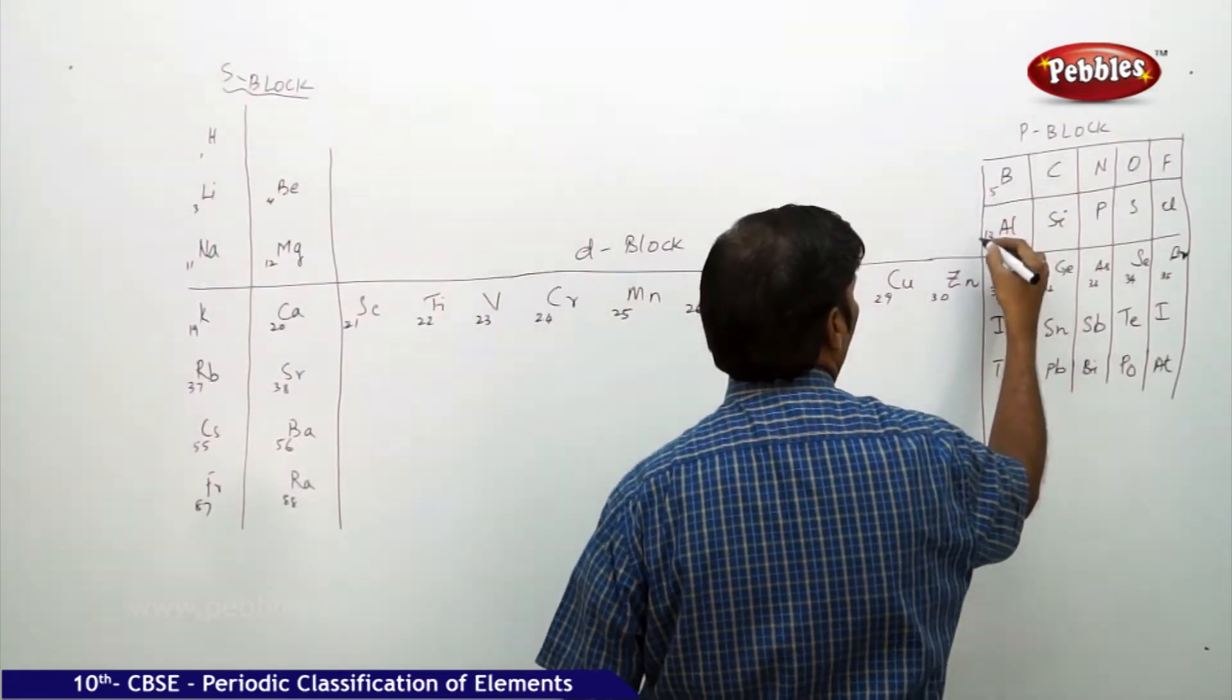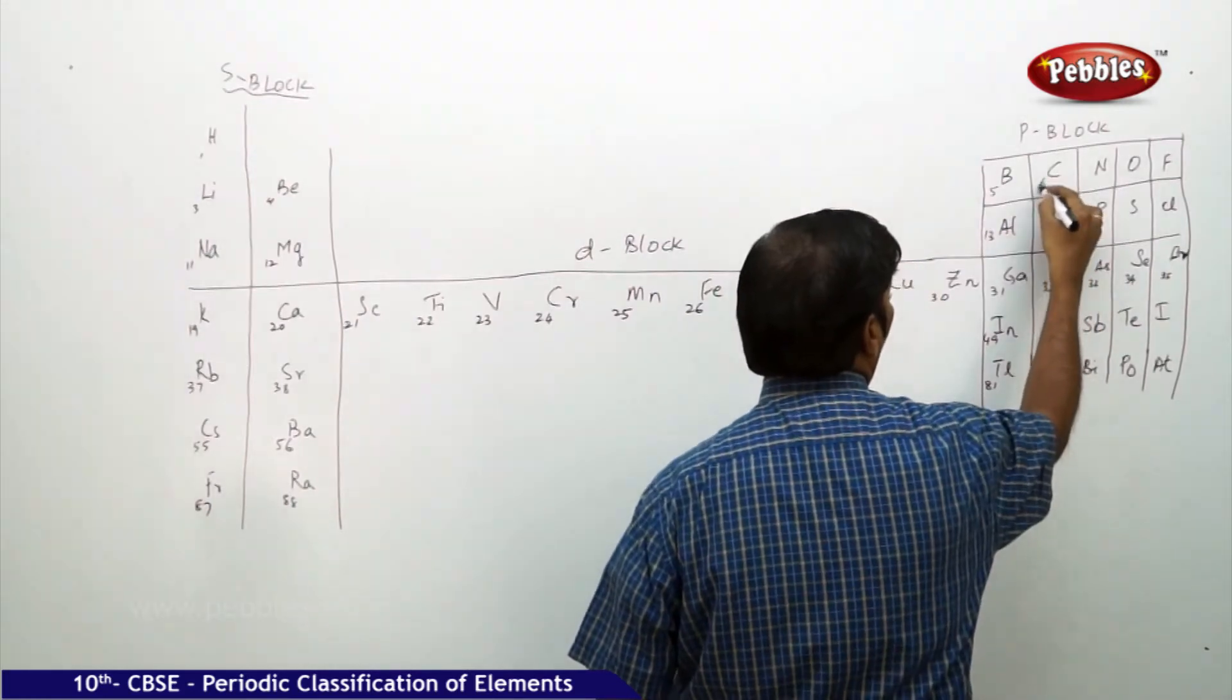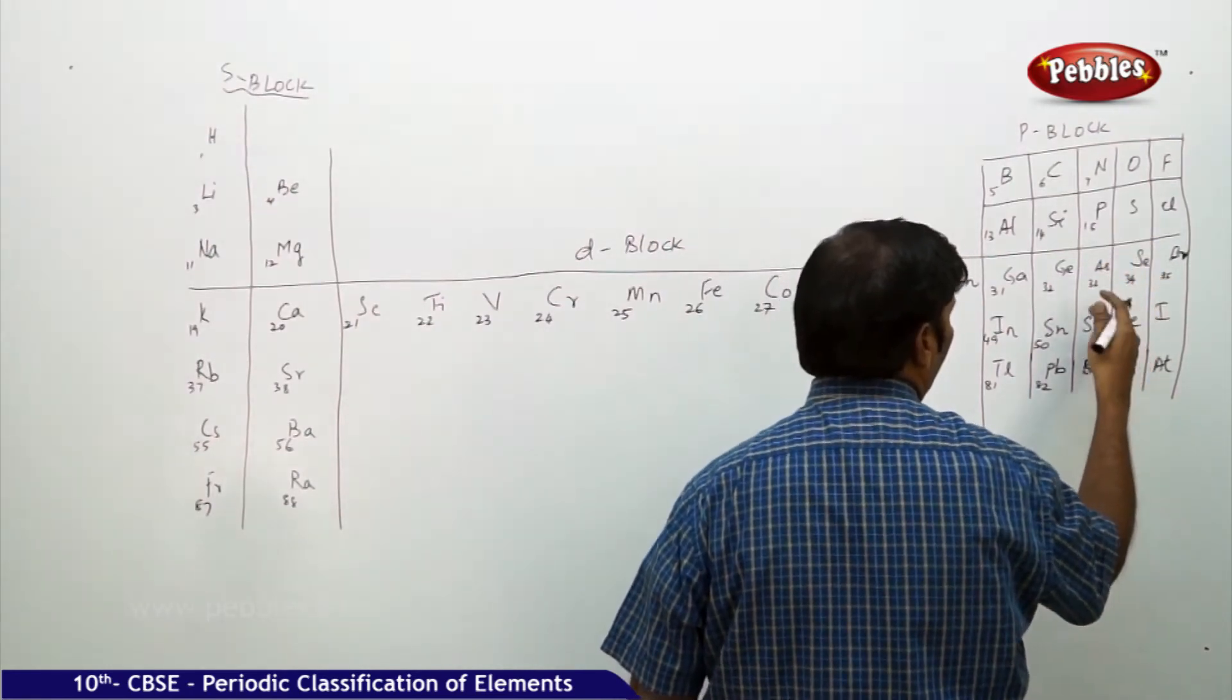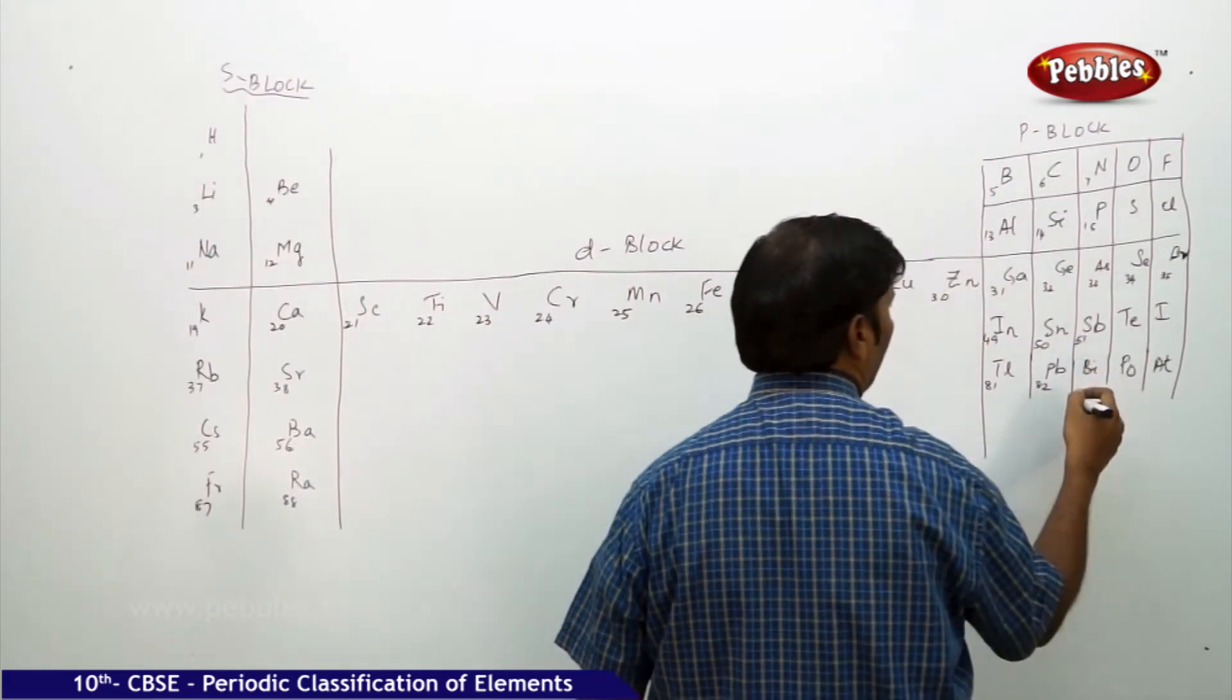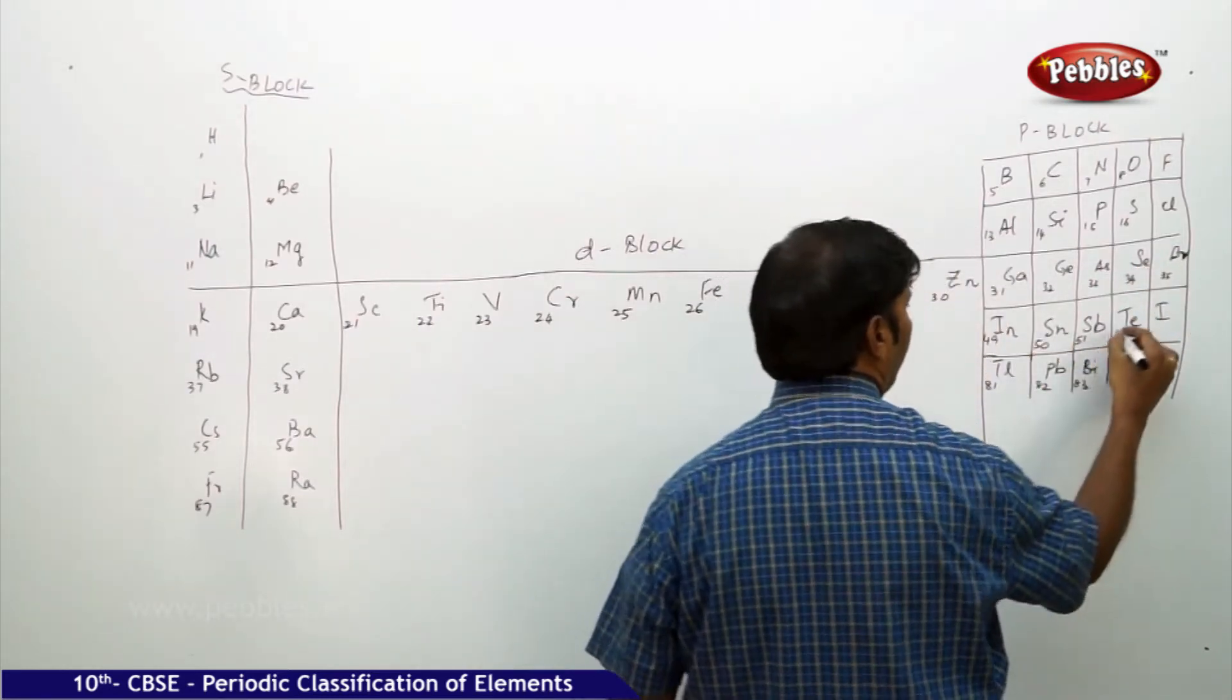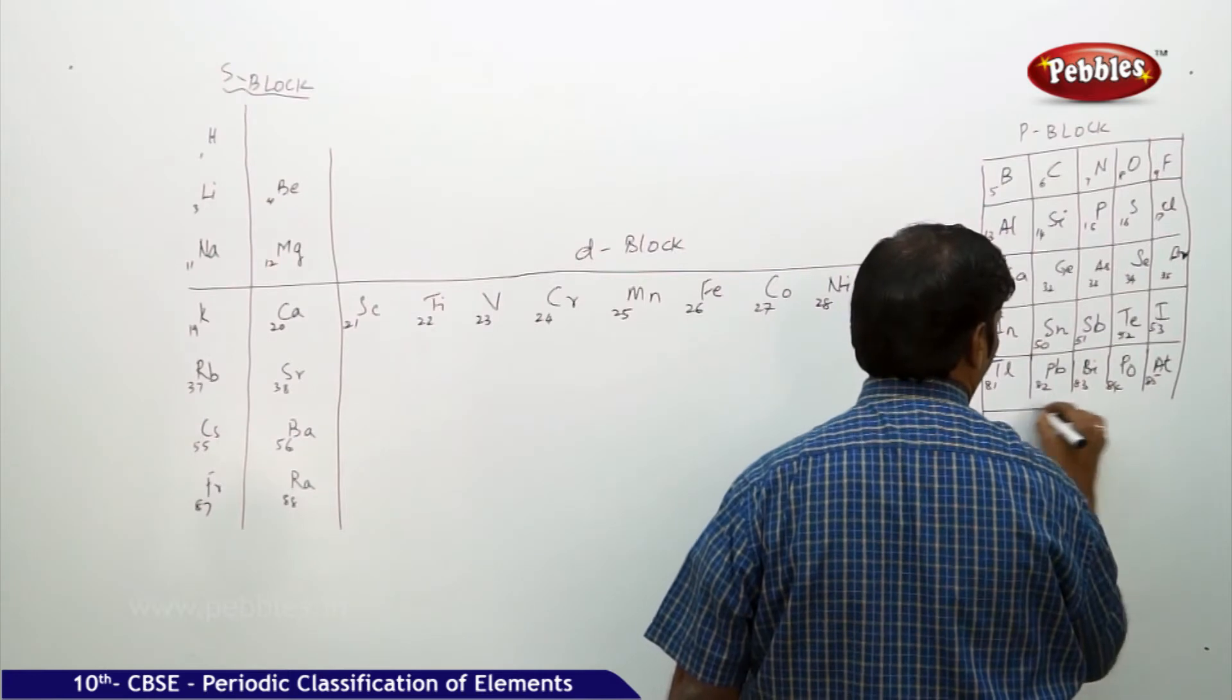Boron atomic number is 5, 13, 31, 49, 81. Carbon atomic number 6, silicon 14, germanium 32, tin 50, lead 82. 7, 15, 33, 51, and 83. Oxygen atomic number is 8, sulfur 16, selenium 34.